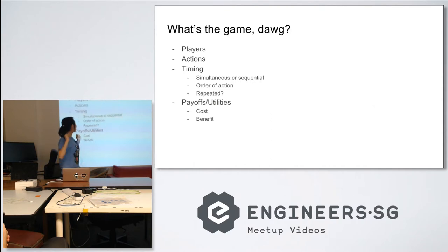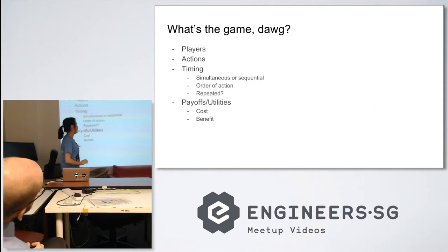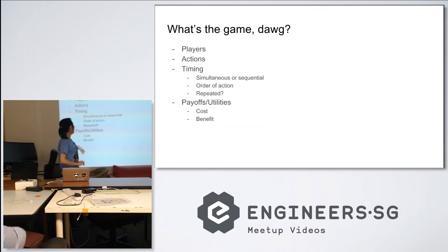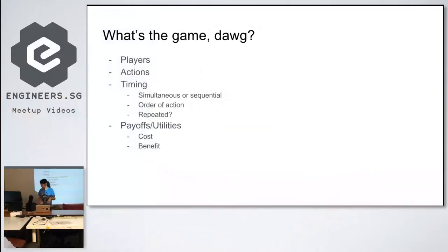So let's open with the fun stuff, which are a bunch of definitions. Game theory — let's just define a game. A game is defined by players, actions, timing, and payoffs or utilities of players.